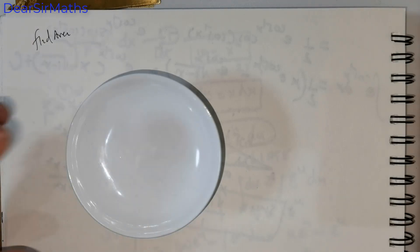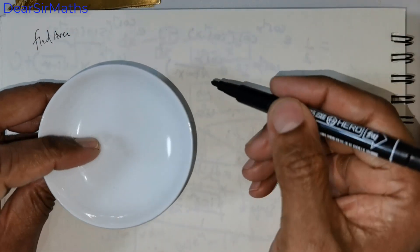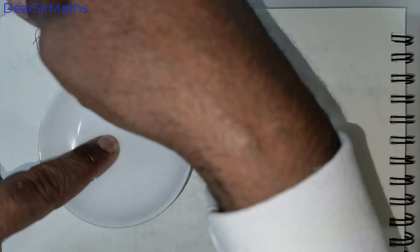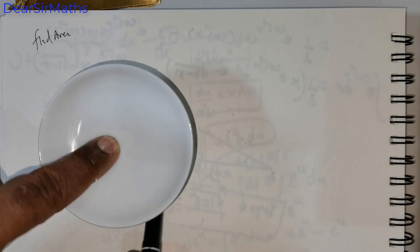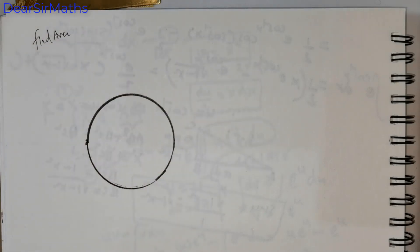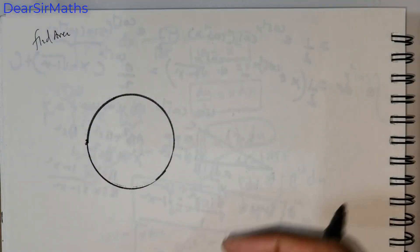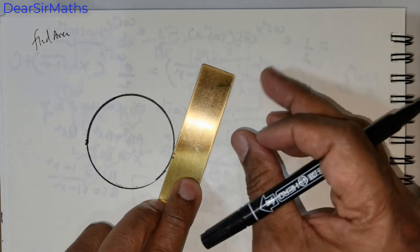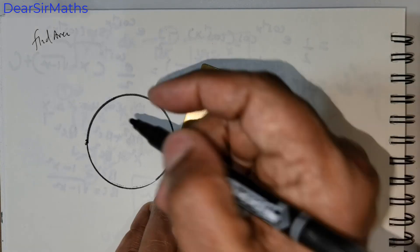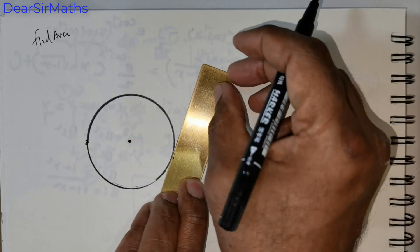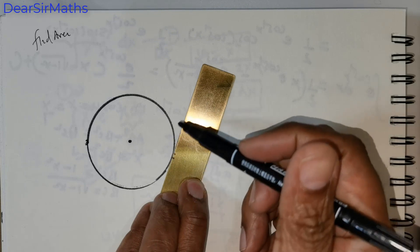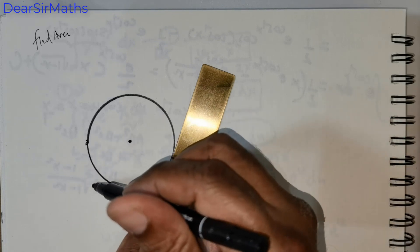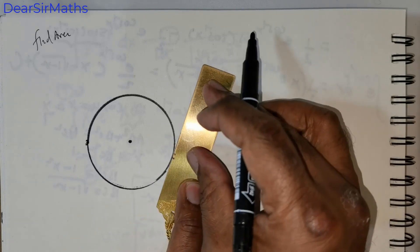Good day everybody. Let's get started with the figure. The figure is a little bit tricky. I'm trying my best to draw it. We have a circle and we need to have the triangle, so the drawing part is a little bit challenging because we need to have the tangents and the triangle.